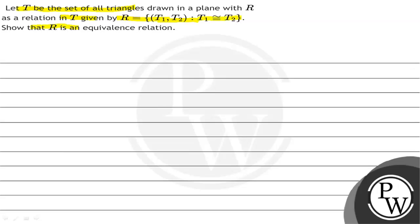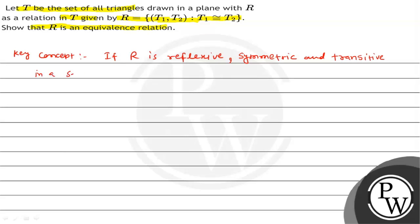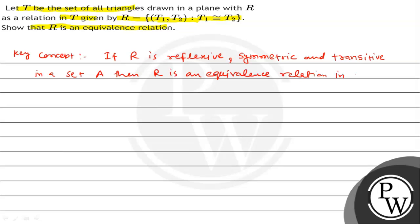Key concept: if R is reflexive, symmetric, and transitive in a set A, then R is an equivalence relation in A. Let's see the solution. Given R = {(t1, t2) : t1 is congruent to t2}.